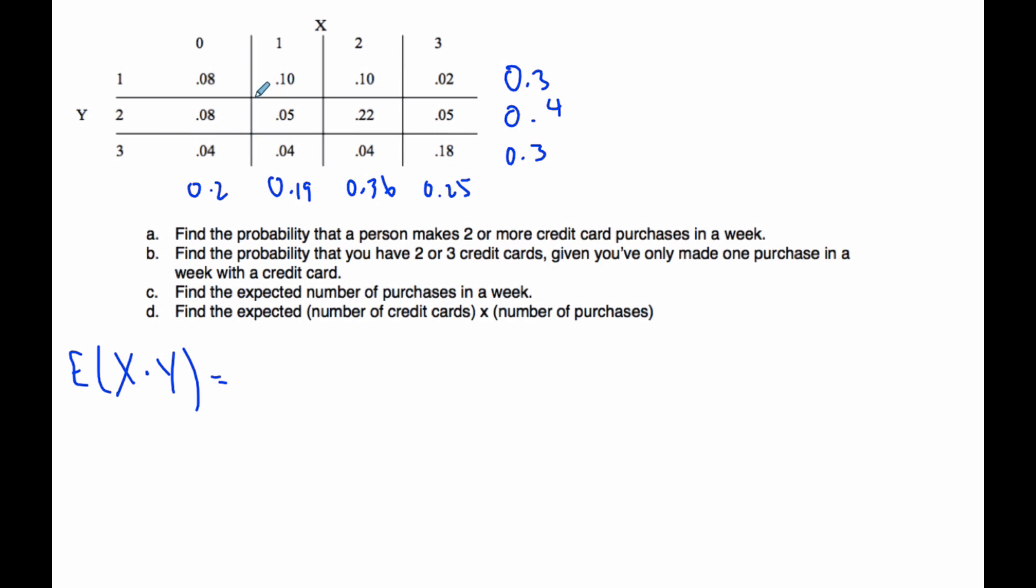I take the two possibilities, so it's 0 times 1 times 0.08 for this cell, because it's 0 and 1, plus 0 and 2, 0 times 2 times 0.08, and then 0 times 3 for this cell here times 0.04. Moving on to this column, it's going to be 1 times 1 times 0.1.